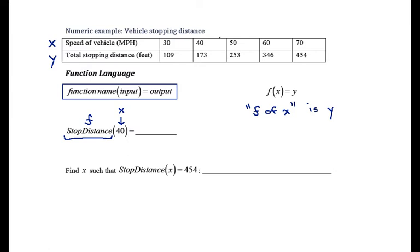If our input is 40, then this is asking us what is the output? So we're going to look at the table, right, and say what is the y value corresponding to an x value of 40? Well that is 173.